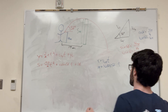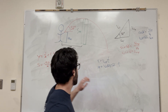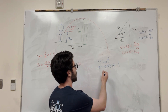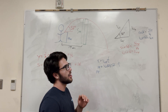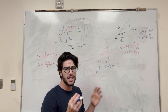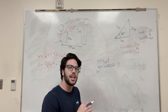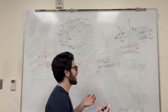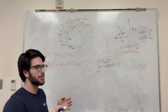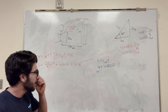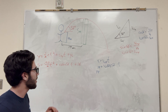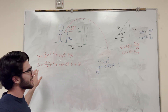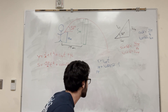Now we have two unknowns — v-naught and t — and two equations. And we can go ahead and work this out. So let's divide over to get v-naught by itself. I'm going to solve for time first. If you want to be creative from this point, you can solve it a different way — you want to set t equal to some equation, then plug t into this equation and see if you get the same numbers. That's a good test.